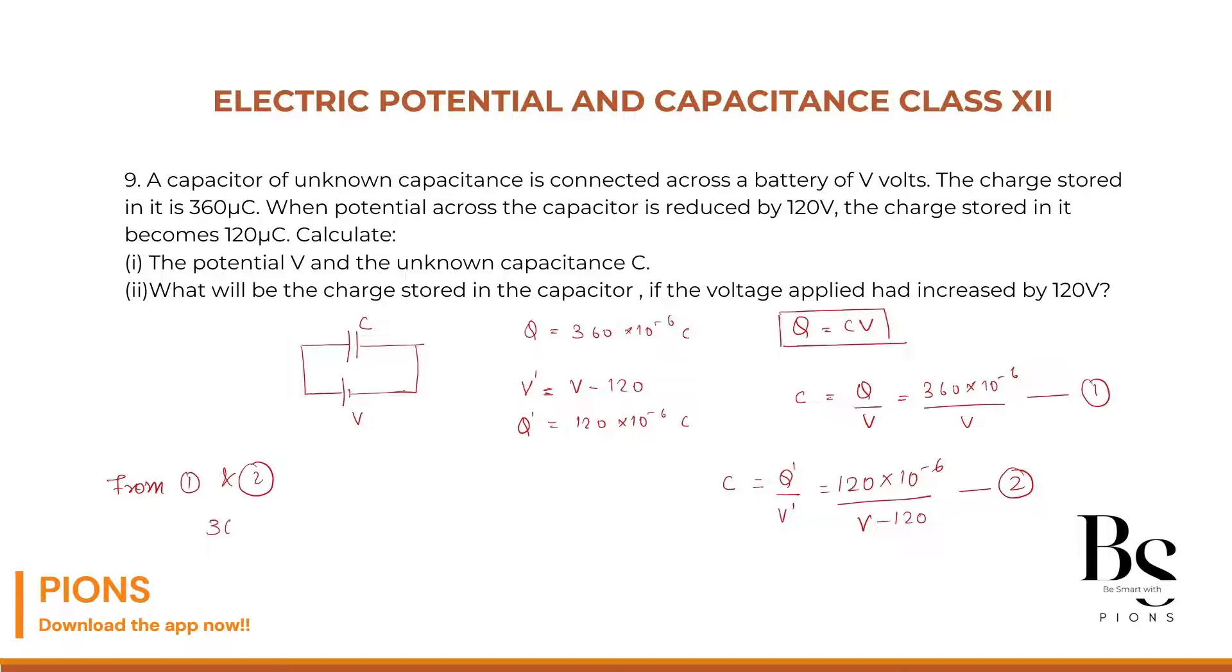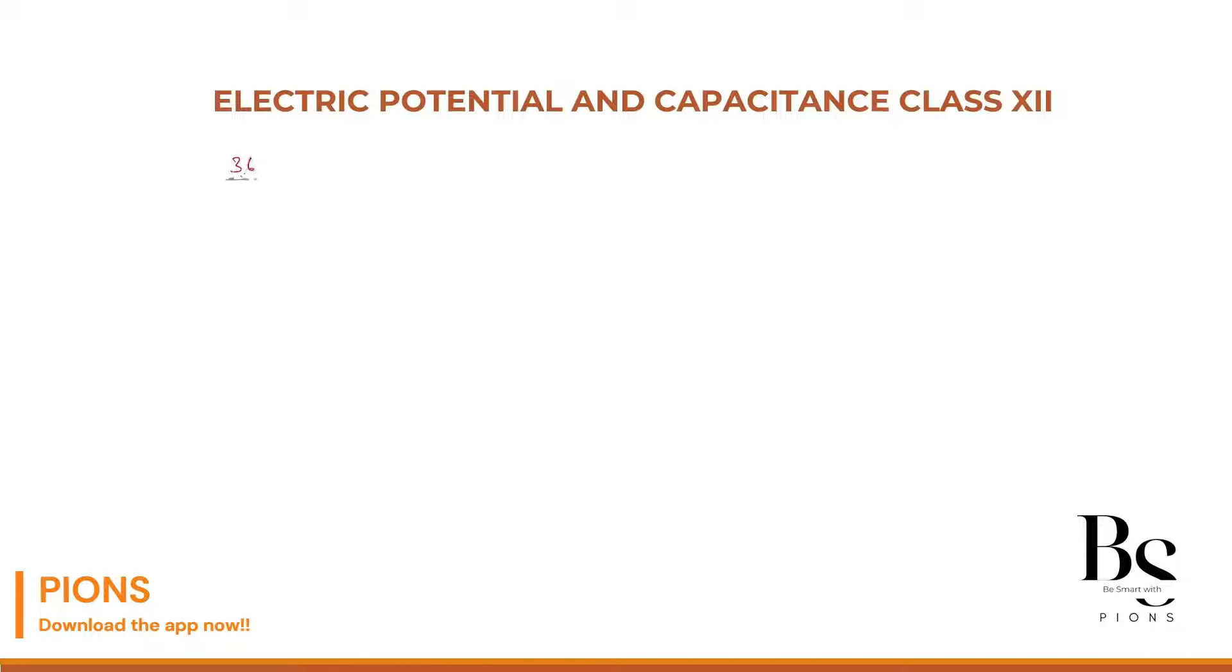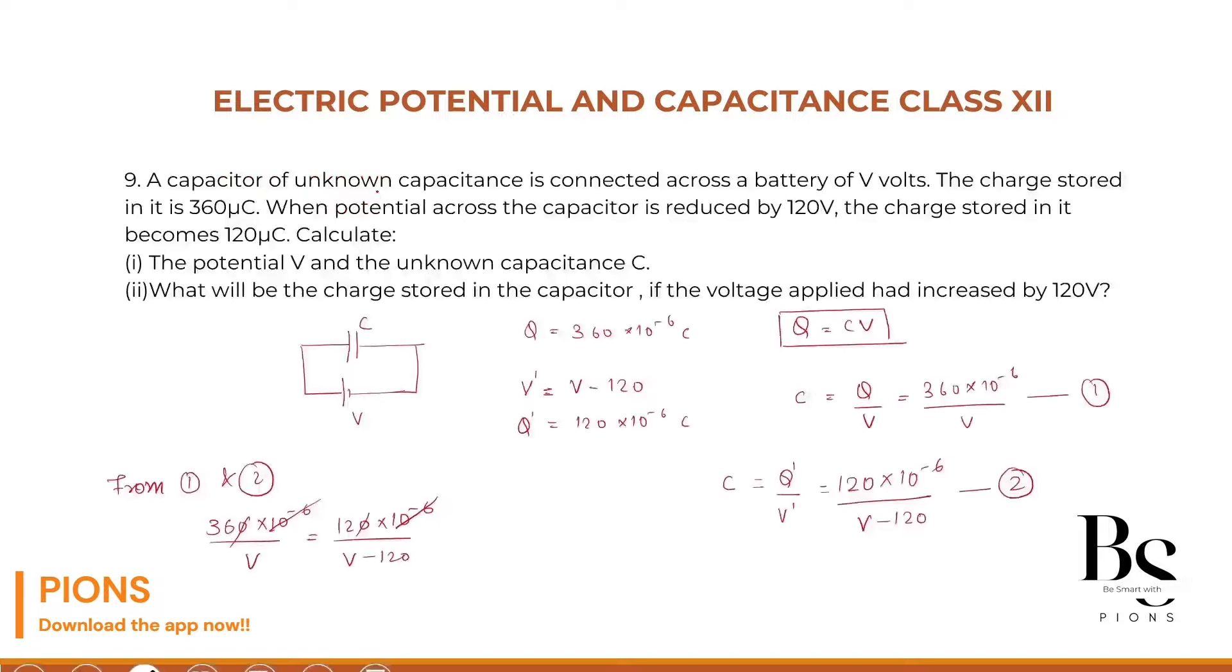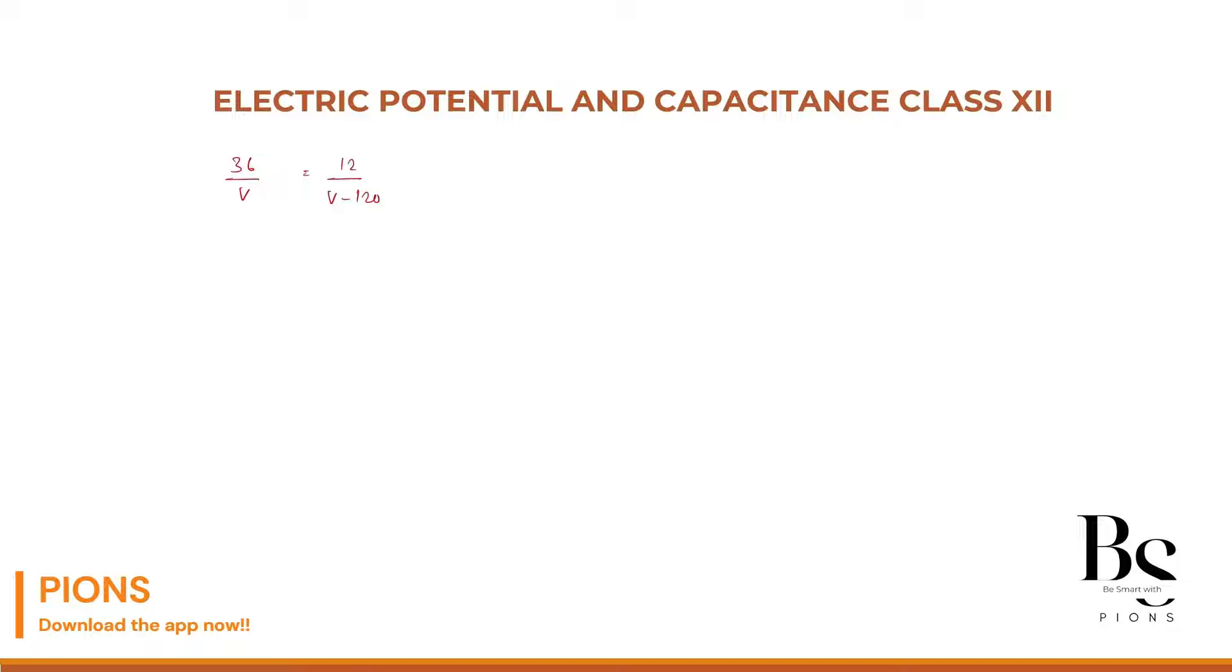Let's equate them. 360 into 10 to the power minus 6 whole divided by V must be equal to 120 into 10 to the power minus 6 whole divided by V minus 120. Cancel this with this. Let's cross multiply. Before I cross multiply, let me simplify more. 36 upon V equals to 12 upon V minus 120. If I take 12 on the left hand side, 3 by V equals to 1 by V minus 120. Now it becomes easy. Let's cross multiply.